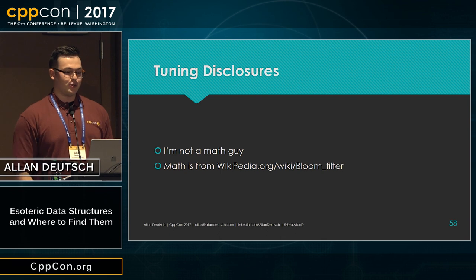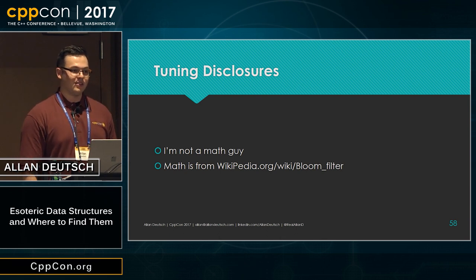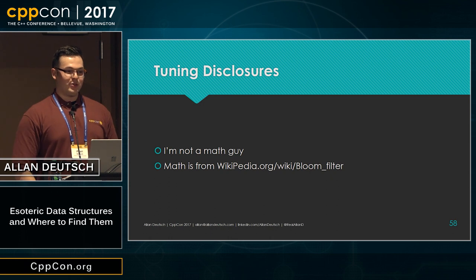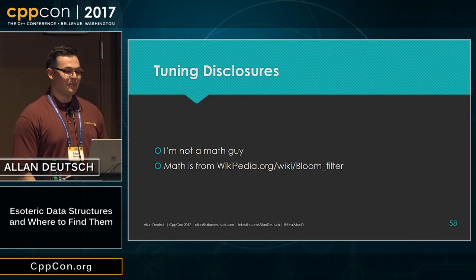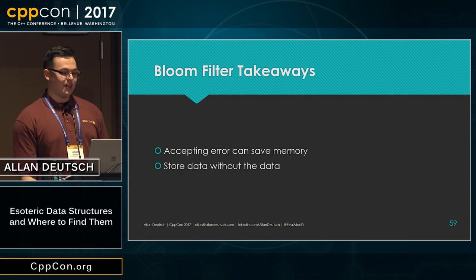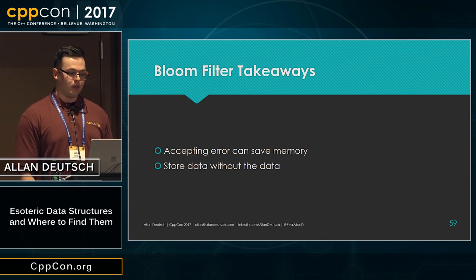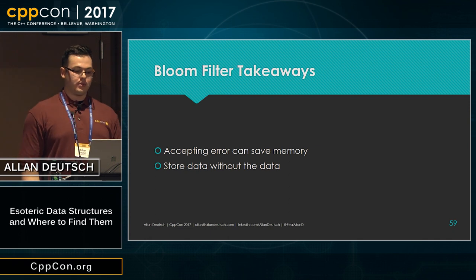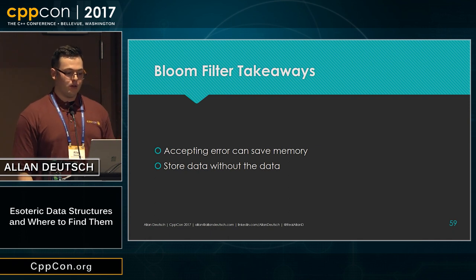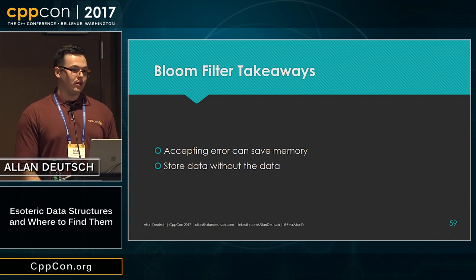As a small disclosure, I'm not really a math guy and I just kind of took the math from Wikipedia — but it's probably right. The takeaways from a bloom filter are that if you're willing to accept some error, you can save a lot of memory. It's also able to store data without actually storing the data, which is a cool way to think of a data structure and not something I've seen in many other places.